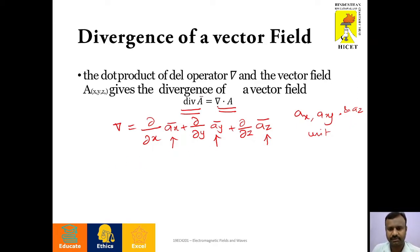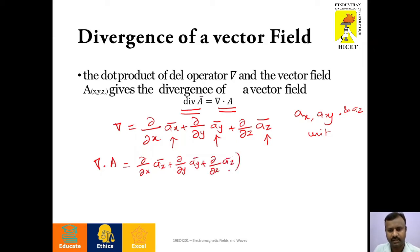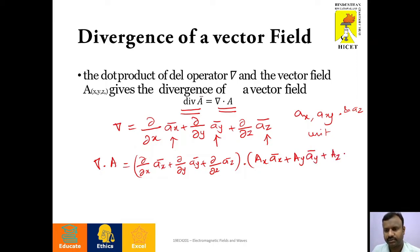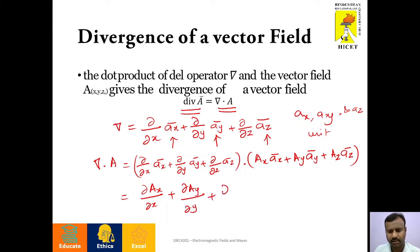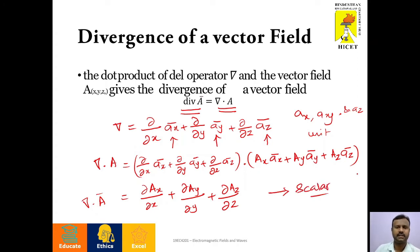If we find out the divergence of a vector field, del dot A is given by (∂/∂x â_x + ∂/∂y â_y + ∂/∂z â_z) dot product with the vector A in all directions — that is, the x component of A along x direction, y component of A along y direction, plus z component of A along z direction. So if we do the dot product, we will get ∂A_x/∂x + ∂A_y/∂y + ∂A_z/∂z. This is the divergence of vector A, and this measure is a scalar. So divergence of a vector is a scalar.